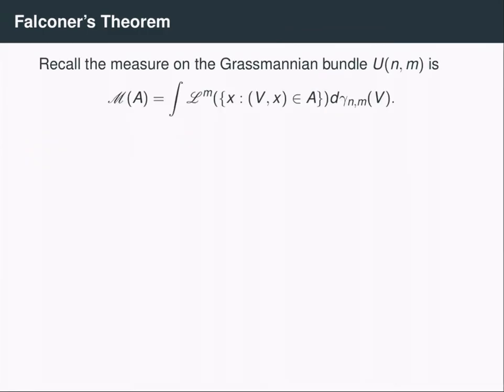The actual theorem of Falconer is a little bit more technical to state. If you're watching this as a standalone video, I highly recommend watching some of the previous videos talking about the Grassmannian and about Venetian blinds. Recall the Grassmannian bundle U and M — that's a set of pairs of M-dimensional planes and the points contained in those planes. There is a natural measure we can define on the Grassmannian: given a set A, the measure of A is defined to be the integral over all M-dimensional planes V of the Lebesgue measure of the set of points X so that the pair (V, X) is in my set A.